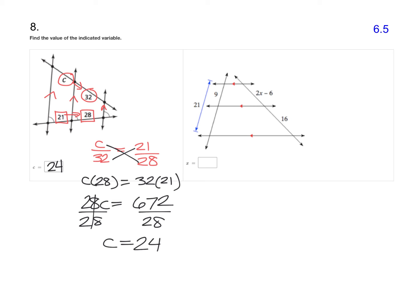Now my second picture requires a little bit of work to set it up. You can see that the 2X minus 6 goes with the 16 on that second transversal.